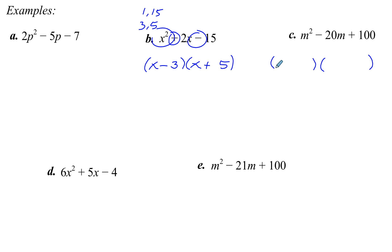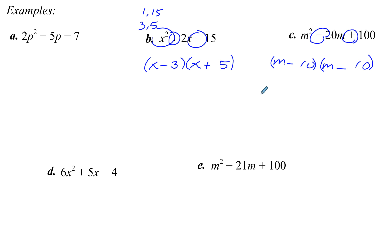To get an m² in our first position, we must have an m and an m. Factors of 100 that add to 20 — that sounds like 10 and 10. 10 times 10 is 100, and 10 plus 10 is 20. The signs are the same and they are both whatever the first sign is — minus and minus. And there is the factored form.